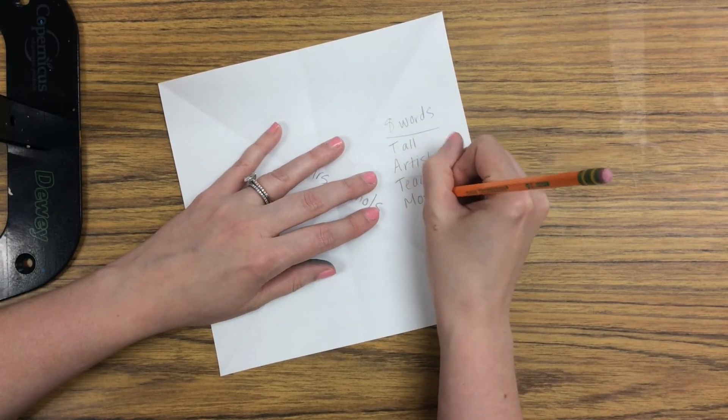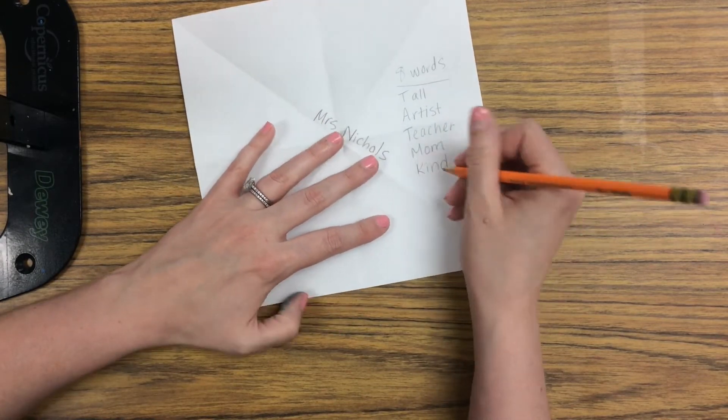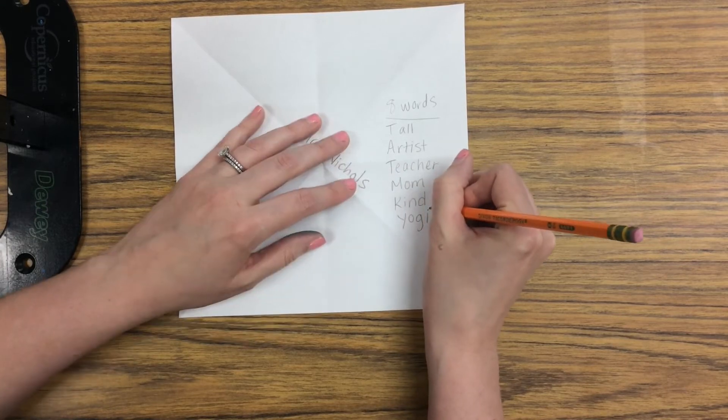The eight words that I chose to describe myself are tall, artist, teacher, mom, kind, yogi, loving, and cubs.